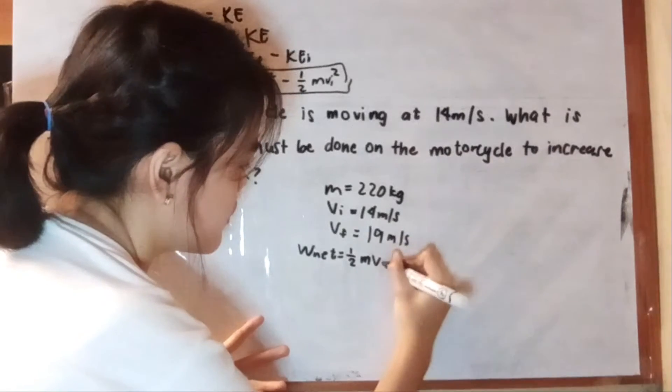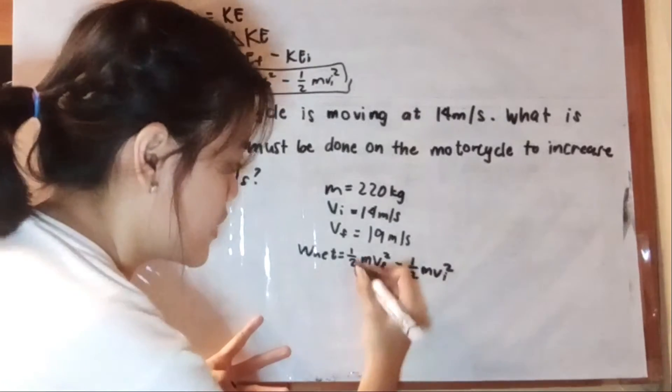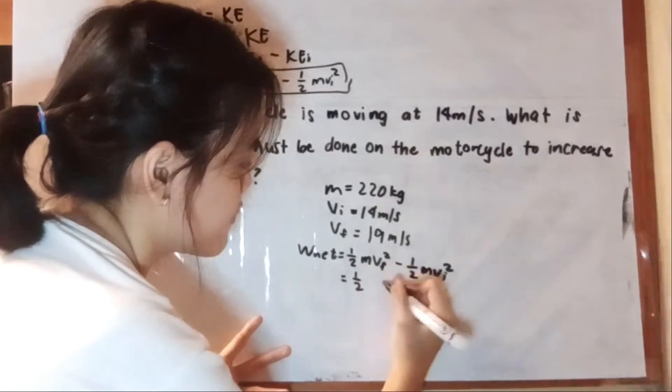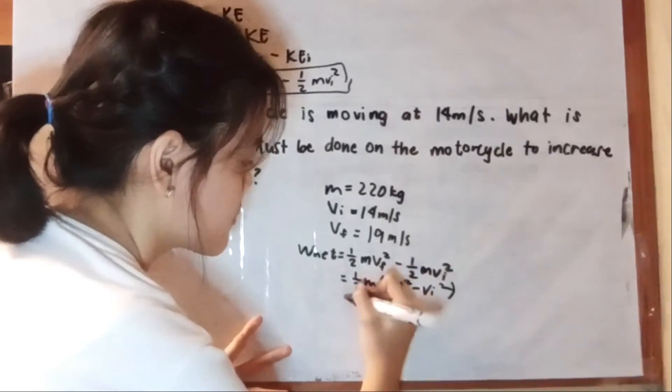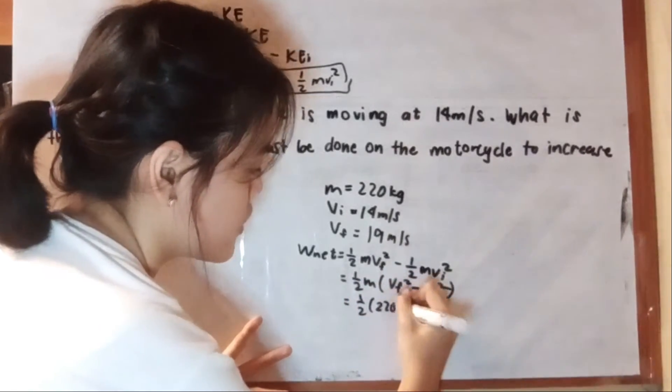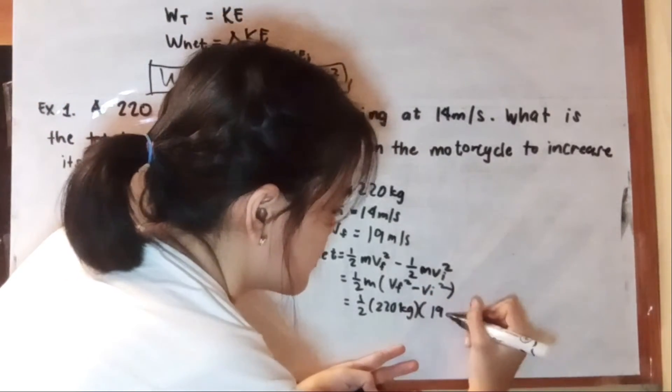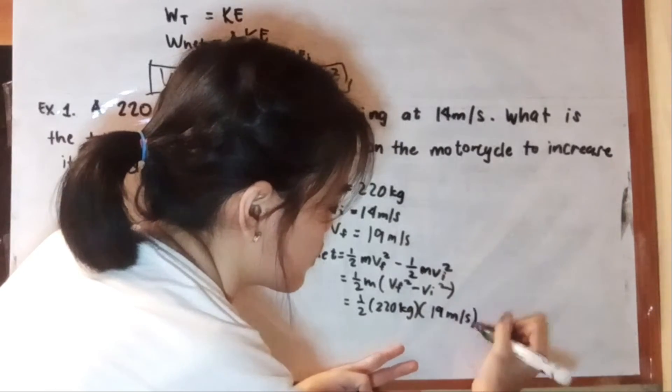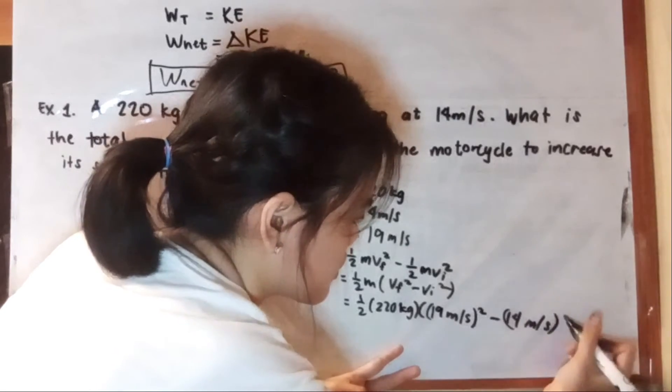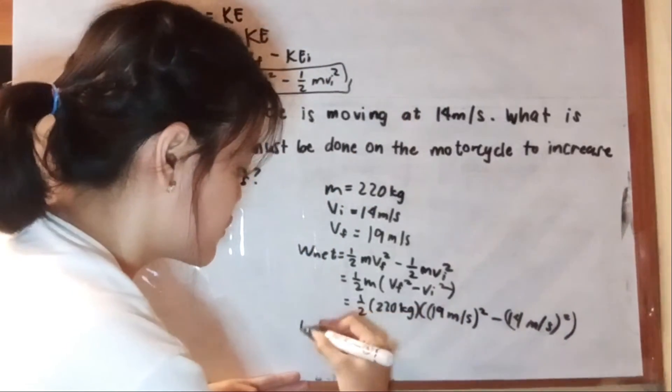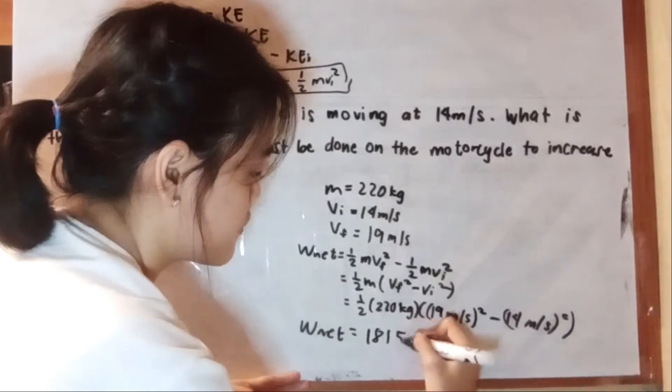We have 1/2 m v_final squared minus 1/2 m v_initial squared. We have 120 kg multiplied by 19 m per second quantity squared minus 14 m per second quantity squared, and we have a total of 18,150 joules.